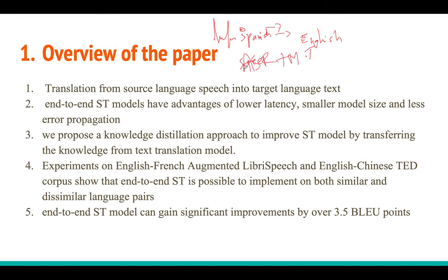The advantages of using end-to-end speech translation: you get lower latency because you bypass MT, since it is a single system that takes audio and predicts text in another language. Model size is smaller because you remove the MT model entirely. And there is less error propagation, because MT will have its own errors and ASR will have its own errors — a single model reduces the overall error.